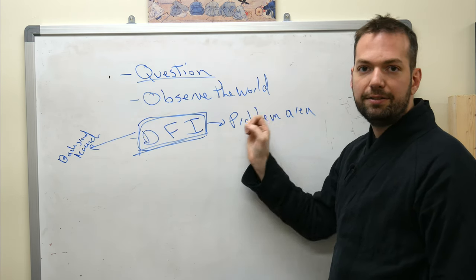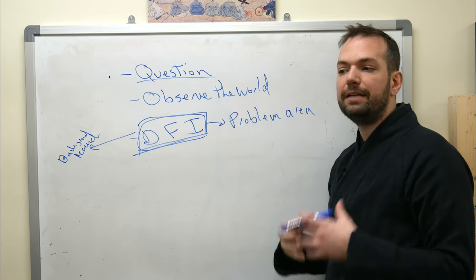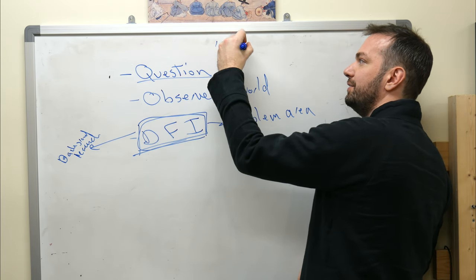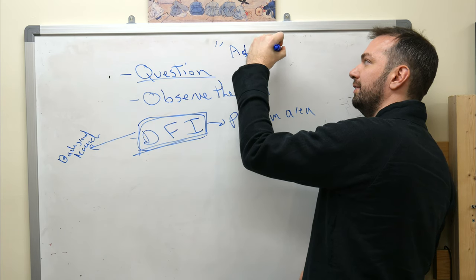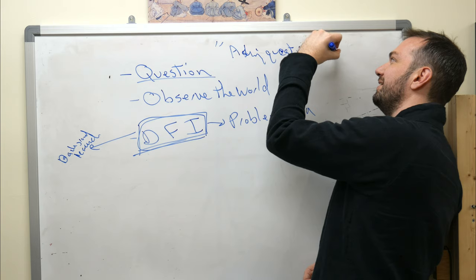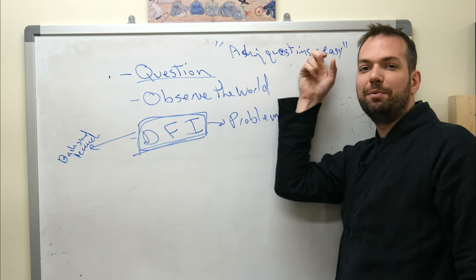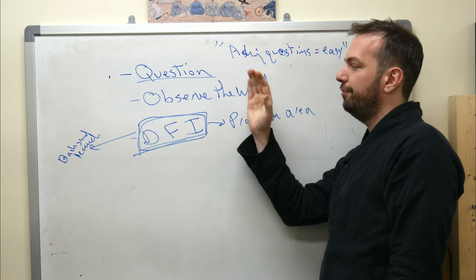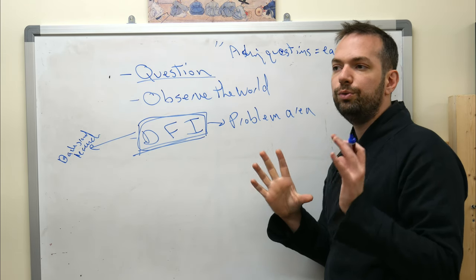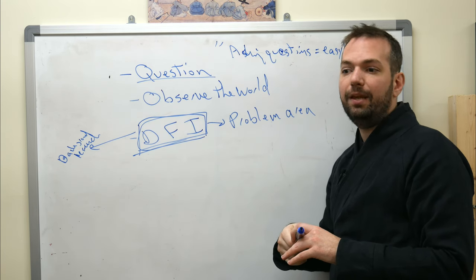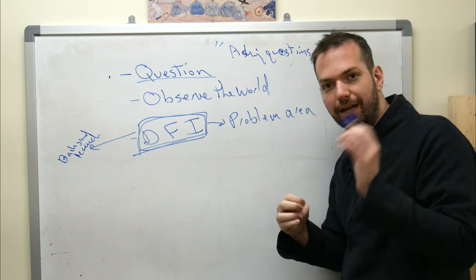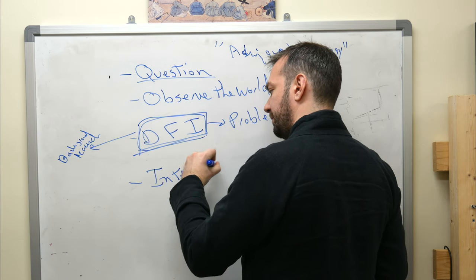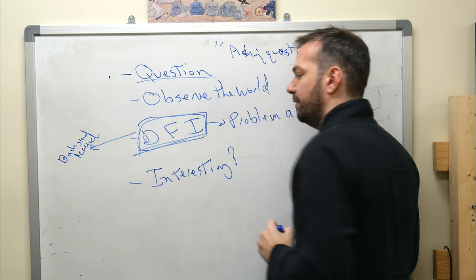Most people don't really ask questions about the world around them, and very few people try to apply those observations to their problem area. If you can get in the habit of doing this all the time, asking questions becomes very, very easy. So we want asking questions to be an easy, natural process that you automatically do all the time. From this whole process, you will get a lot of questions — but what we're actually wanting is not just a lot of questions. We want interesting questions.